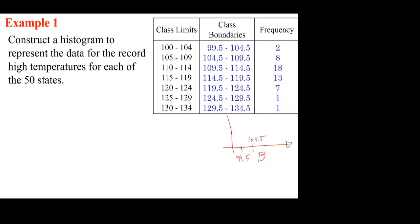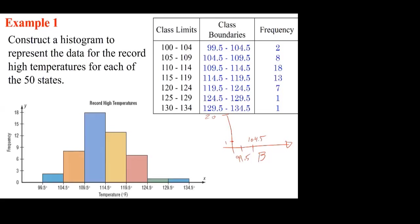On the vertical axis, you can use frequencies, percent frequencies, or relative frequencies — use whichever you are asked to use. In this case, we use frequencies. So on the horizontal axis, put 99.5, then 104.5, and move on, building your scale. The bars are adjacent. Whether you use frequency or percent frequency, the shape of the histogram is very similar.